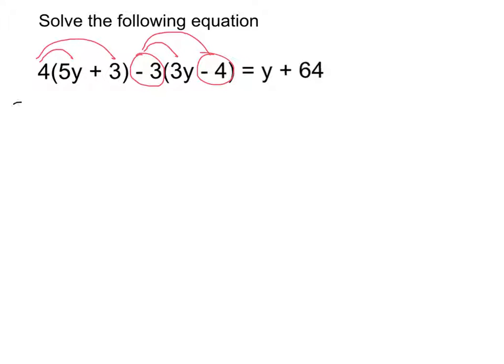So if I expand those out, I'm going to get 4 times 5y is 20y, 4 times 3 is 12, negative 3 times 3y is negative 9y. Negative 3 times negative 4, well, negative times a negative is positive, so that's plus 12 is equal to y plus 64.